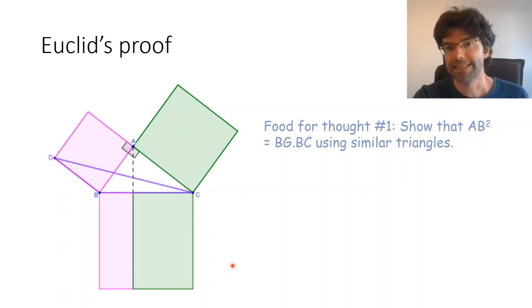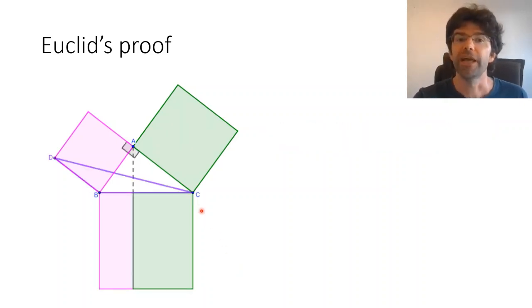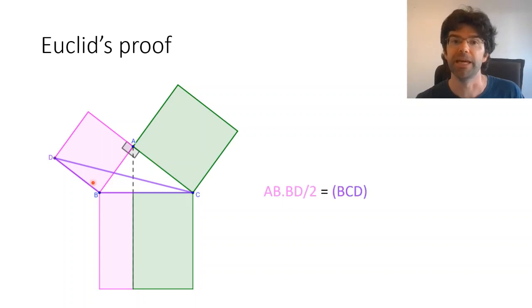So first we draw in this line CD and we ask what's the area of the purple triangle. Now if we take BD as the base, the parallel line through the other vertex is CA and its extension, and so the height of the triangle, the perpendicular distance from BD to CA, is just BA, because we know that this is at right angles to BD. So we've got half the base times the height being half of BD times BA, in other words, half the area of this square.